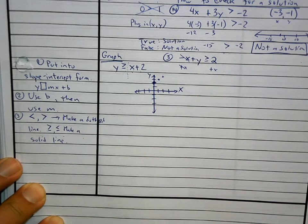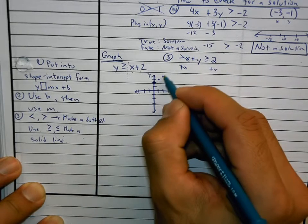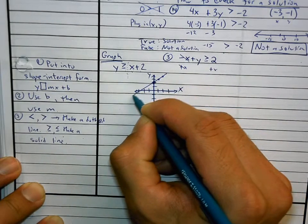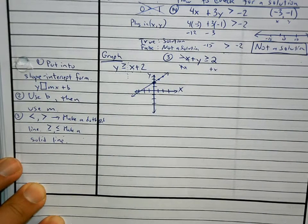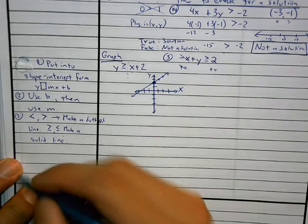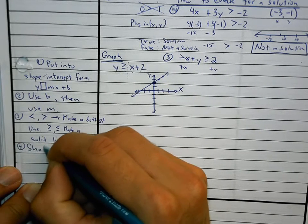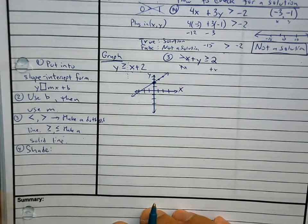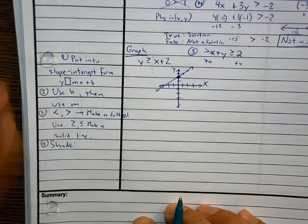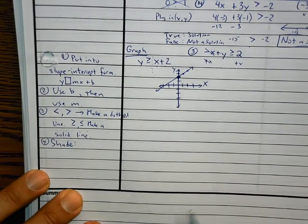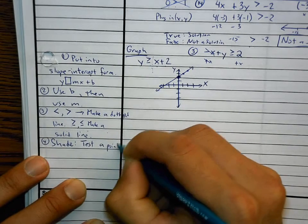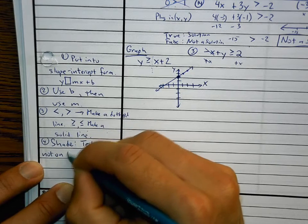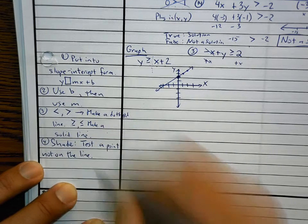So in this problem, is this a solid or dotted line? It's solid — I'm going to draw my solid line. And then we're going to have to shade. How do I shade? You have to test a point not on the line.